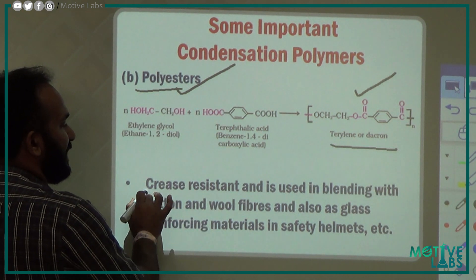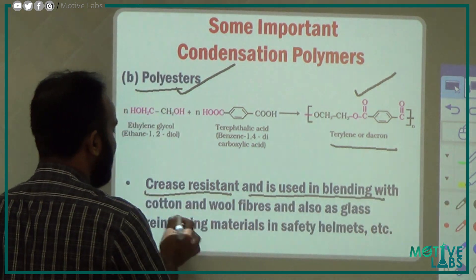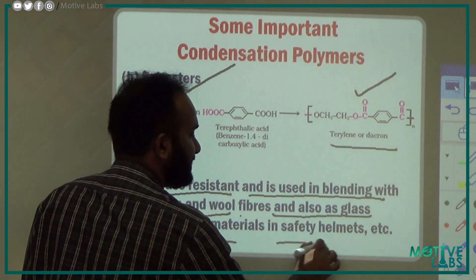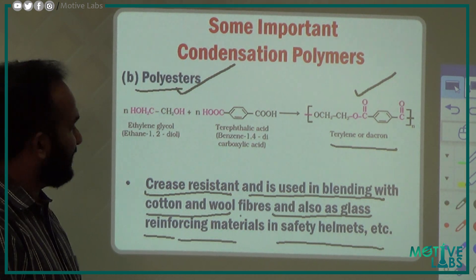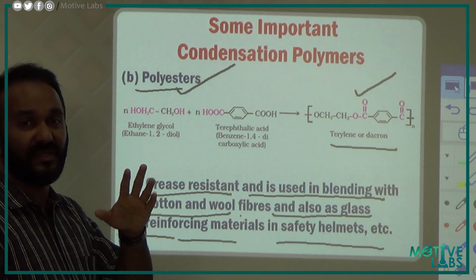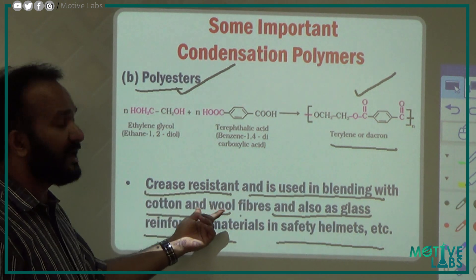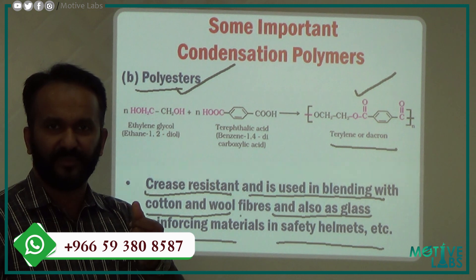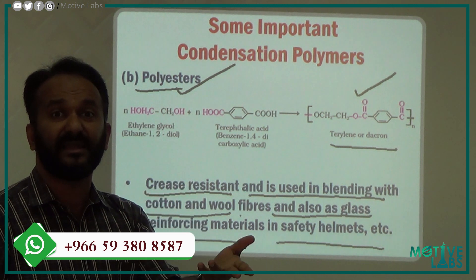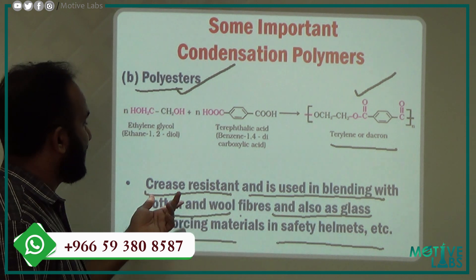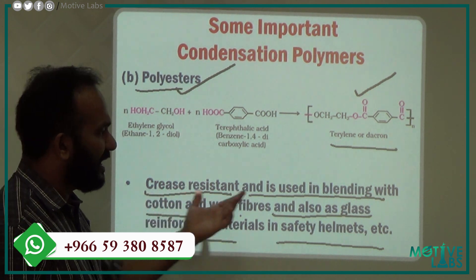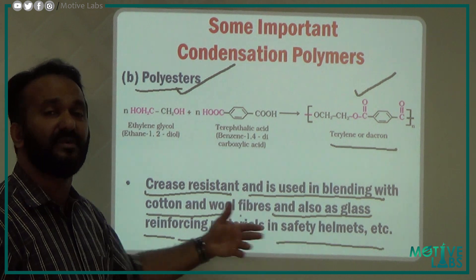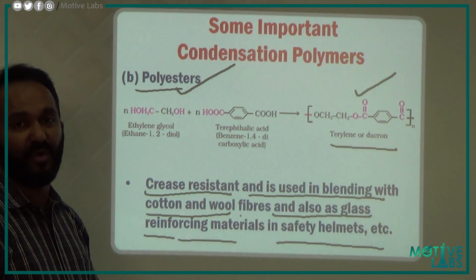The uses of polyester: it is crease resistant and is used in blending with cotton and wool fibers. Also used as glass reinforcing material in safety helmets. Polyamide and polyester are both important condensation polymer categories.